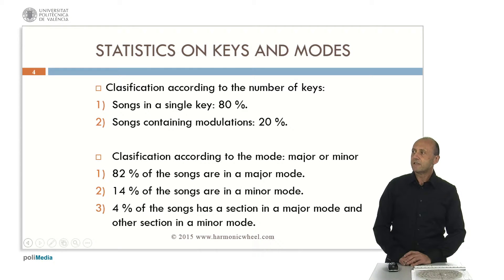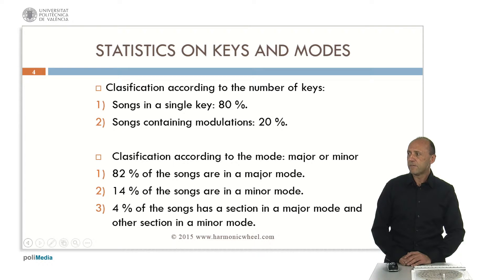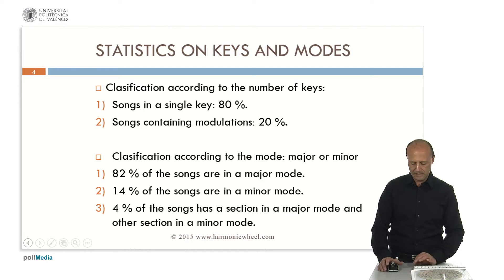Now, some statistics on keys and modes. 80% of the songs are written in a single key, while the other 20% are written with some modulations. We can also classify the songs according to the mode, major or minor. This way, 82% of the songs are composed in a major mode, 14% in a minor mode, and 4% of songs have a section in a major mode and another section in a minor mode.